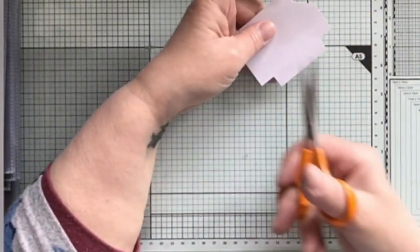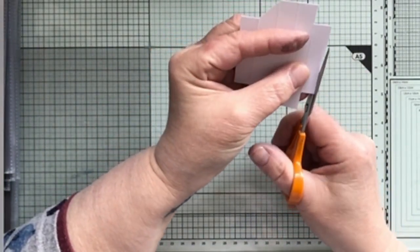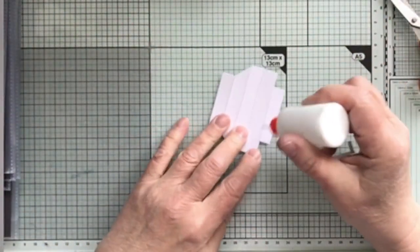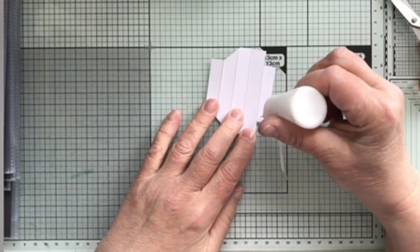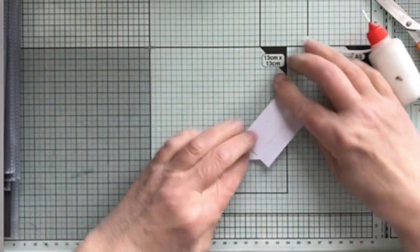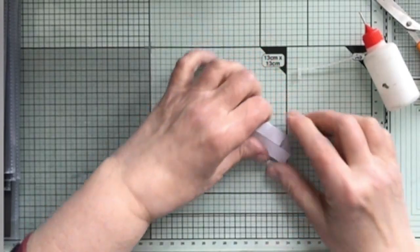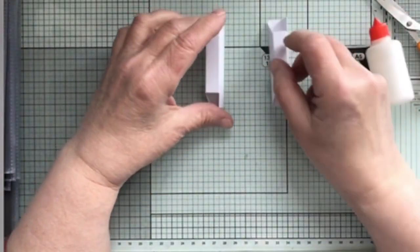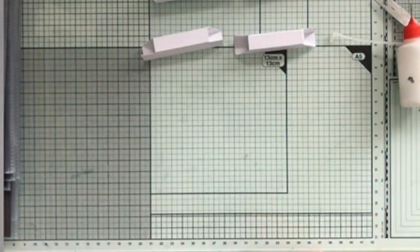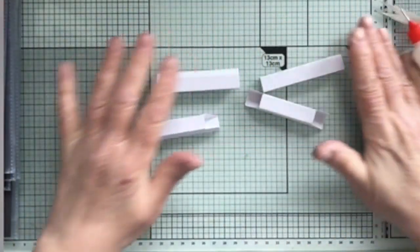And then on this tab at the bottom you want to just take a little bit off again, just to take the bulk away. Put the glue on your tab. And then if you fold those two up and then fold that one over, stick it down. And so you are going to have two that look like that and two that look like that.